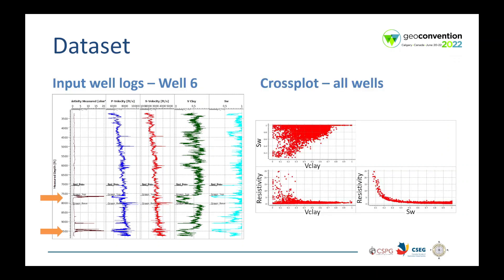Here we have the cross plot of the petrophysical parameters — resistivity, water saturation and v-clay — using data from all wells.